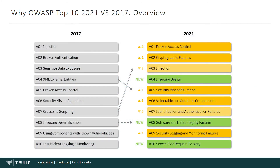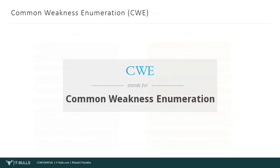Let's review now the OWASP Top 10 list. On this slide you can see the top 10 vulnerabilities according to OWASP Top 10 2021 and 2017. Let's briefly compare these two lists. Broken Access Control moves up from the fifth position to the category with the most serious web application security risk in comparison to OWASP Top 10 2017. The contributed data indicates that on average 3.81% of applications tested had one or more common weakness enumerations, with more than 318,000 occurrences of common weakness enumerations in this risk category. The 34 CWEs mapped to broken access control had more occurrences in applications than any other category.